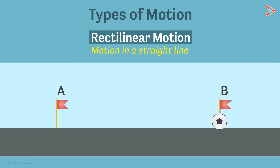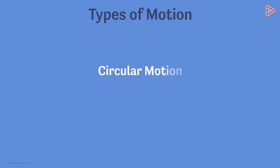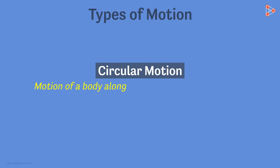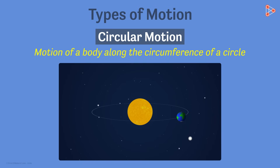There is another type of motion called circular motion. It is the motion of a body along the circumference of a circle. The motion of the earth around the sun is an example of circular motion.